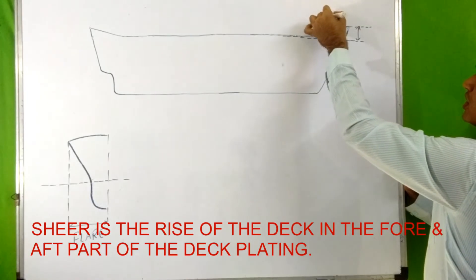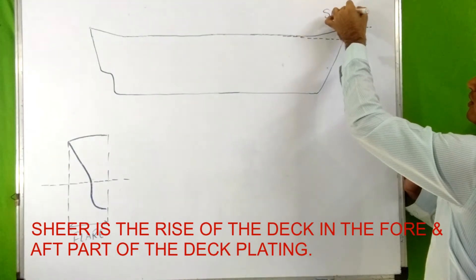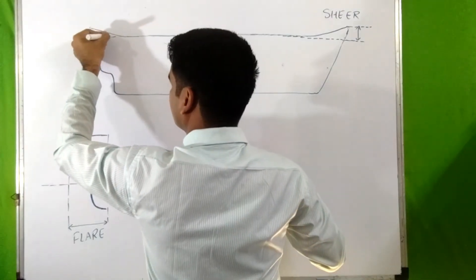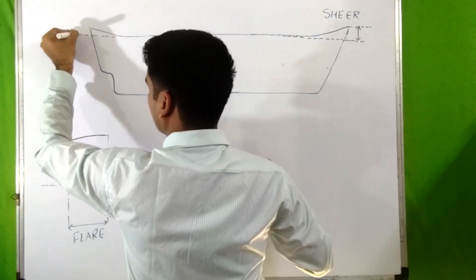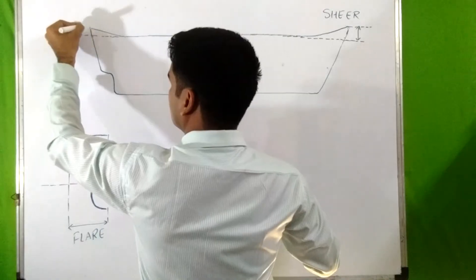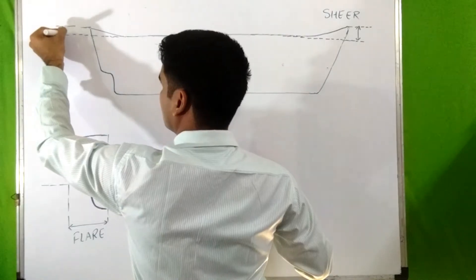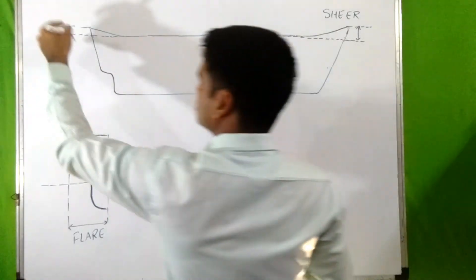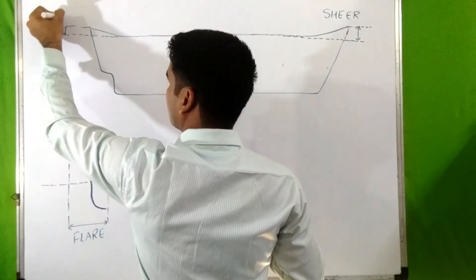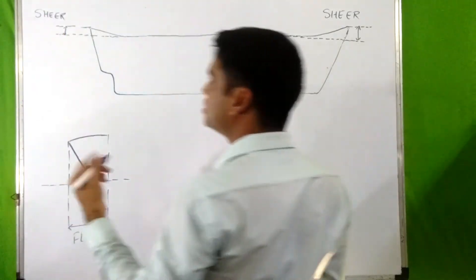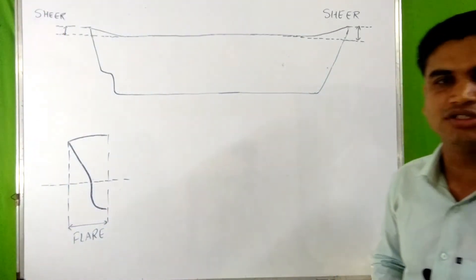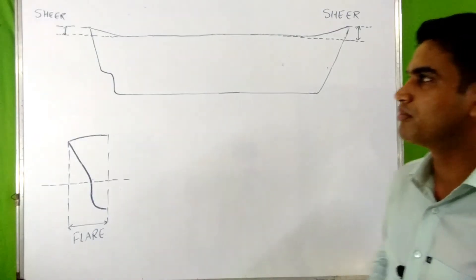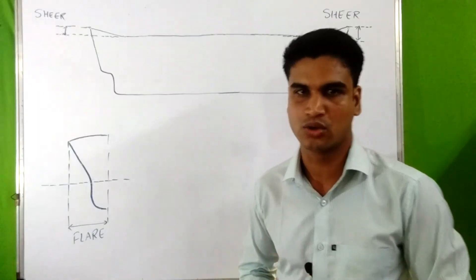This is known as shear at the forward end. Similarly, at the aft end, this rise of deck plating where the parallel line meets the stern is known as shear at the aft side. This shear provides extra reserve buoyancy to the forward and aft end of the ship.